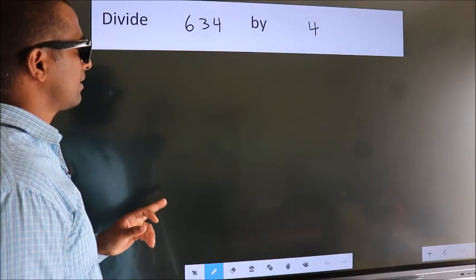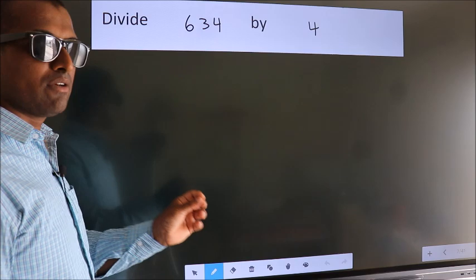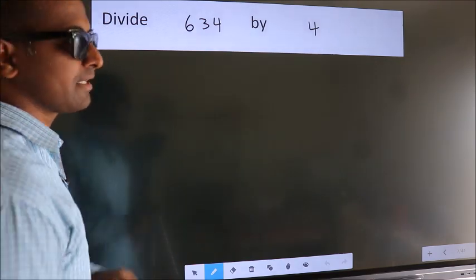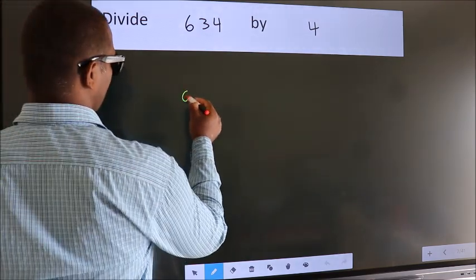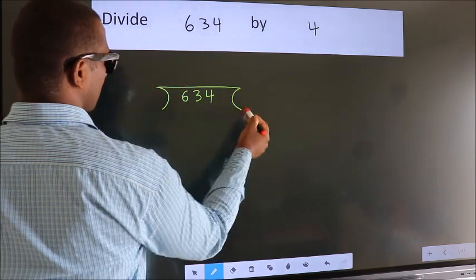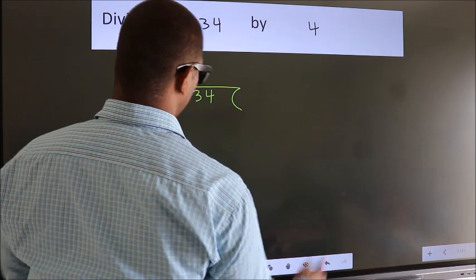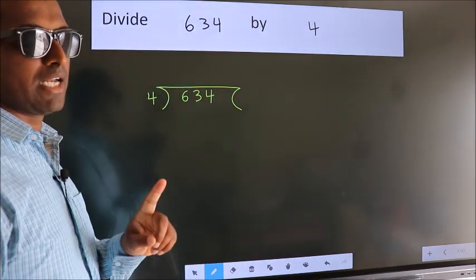Divide 634 by 4. To do this division, we should frame it in this way: 634 here, 4 here. This is your step 1.